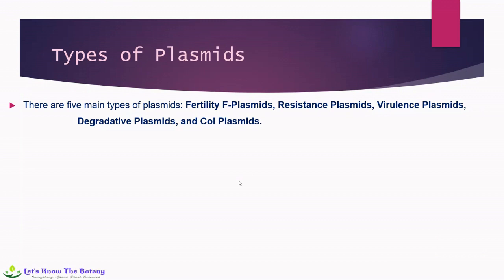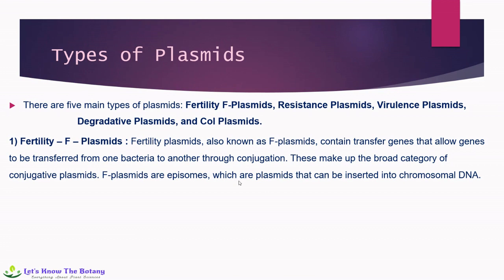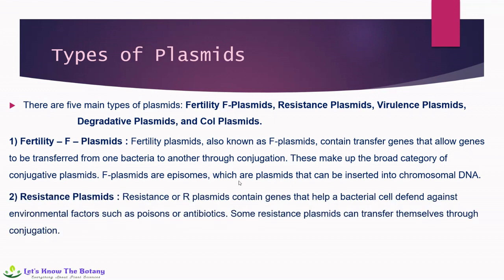There are five main types of plasmids: fertility plasmids (F plasmids), resistance plasmids, virulence plasmids, degradative plasmids, and col plasmids. The fertility or F plasmids contain transfer genes that allow genes to be transferred from one bacterium to another through conjugation, making up the broad category of conjugative plasmids. F plasmids are epizomes — plasmids that can be inserted into chromosomal DNA. Resistance plasmids, also called R plasmids, contain genes that help a bacterial cell defend against environmental factors such as poisons or antibiotics. Some resistance plasmids can transfer themselves through conjugation.